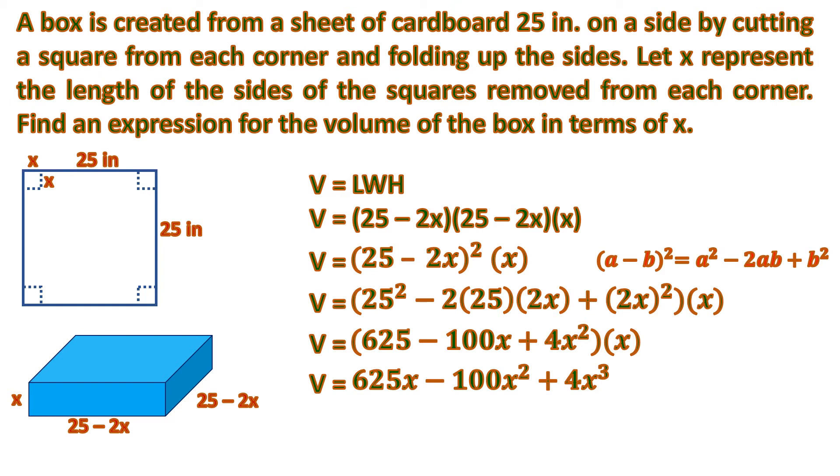This is actually the volume but you can arrange it in order according to the degree of the variable. So it will be 4x cubed minus 100x squared plus 625x. And that is the volume of the box in terms of x.